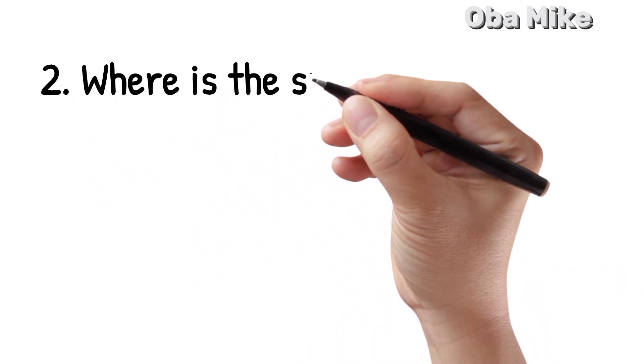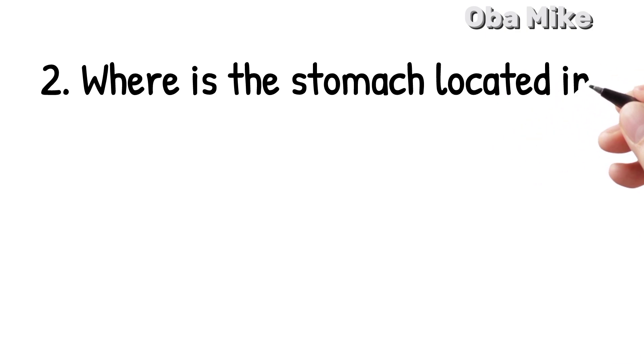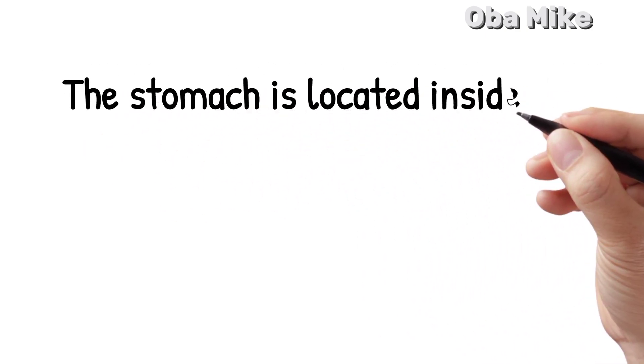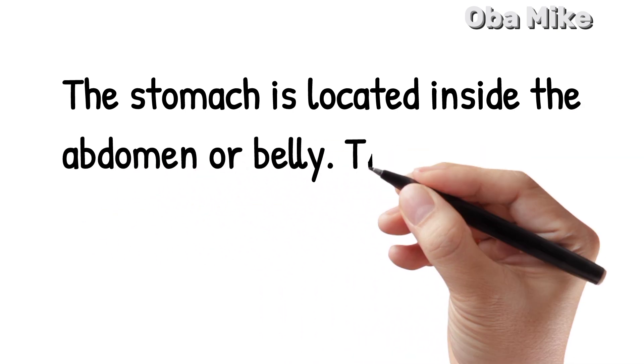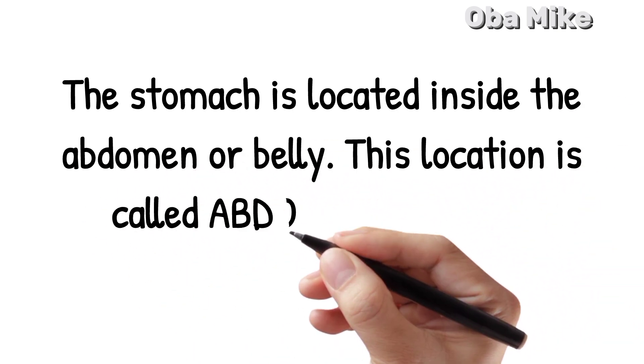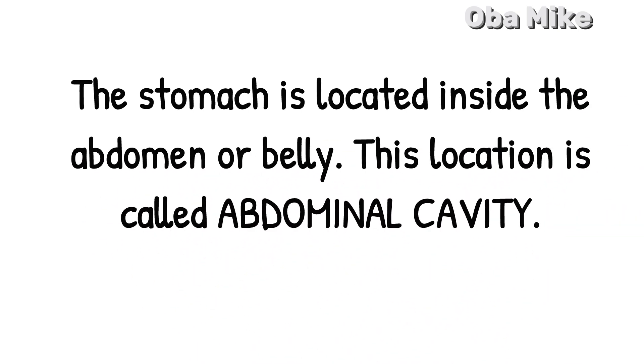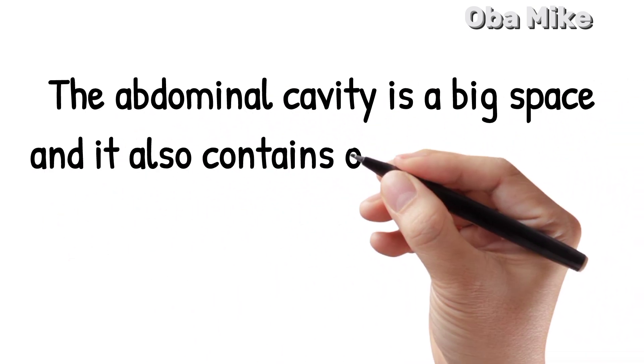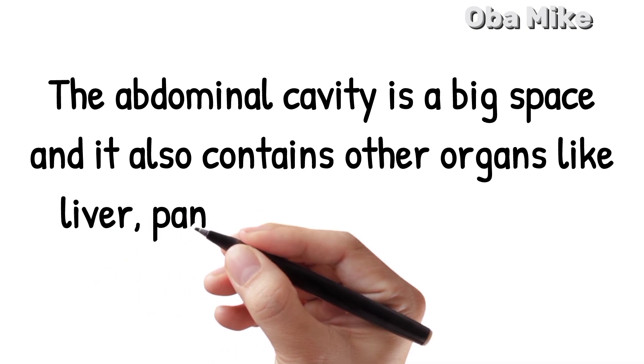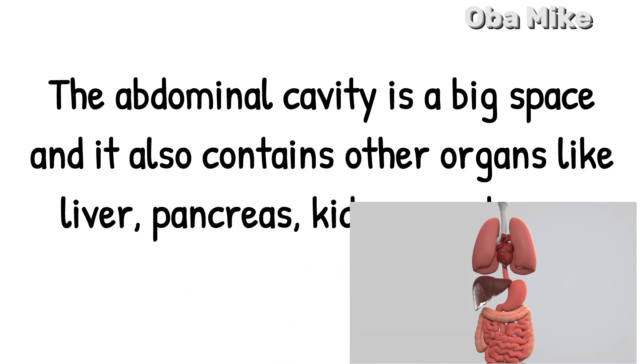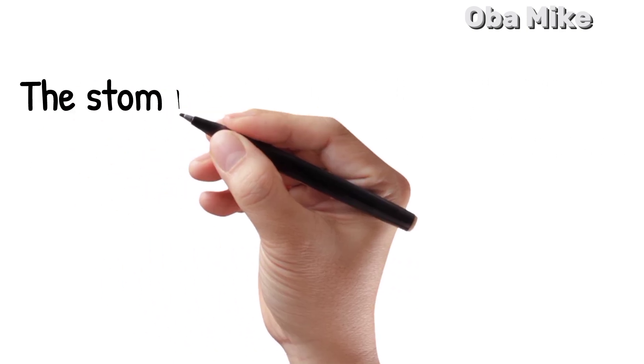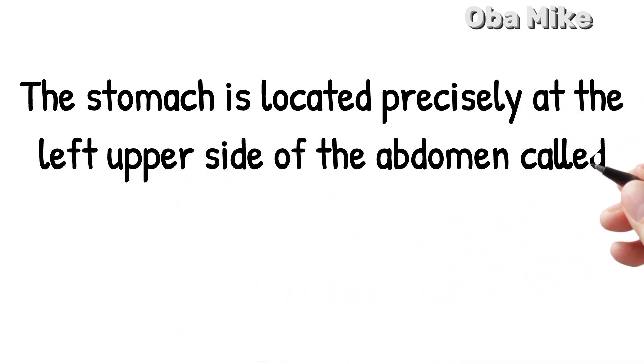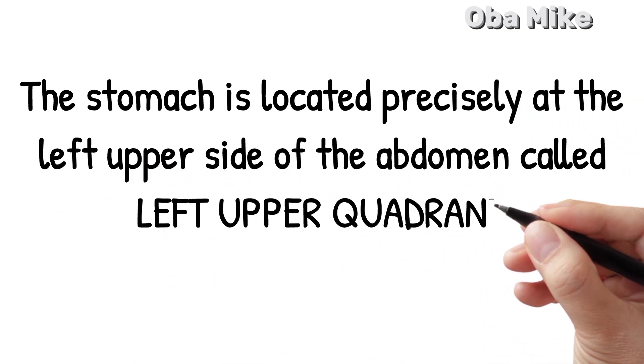Number 2. Where is the stomach located in the body? The stomach is located inside the abdomen, or belly. This location is called the abdominal cavity. The abdominal cavity is a big space and also contains other organs like the liver, pancreas, kidneys, and so on. The stomach is located precisely at the left upper side of the abdomen, called the left upper quadrant.